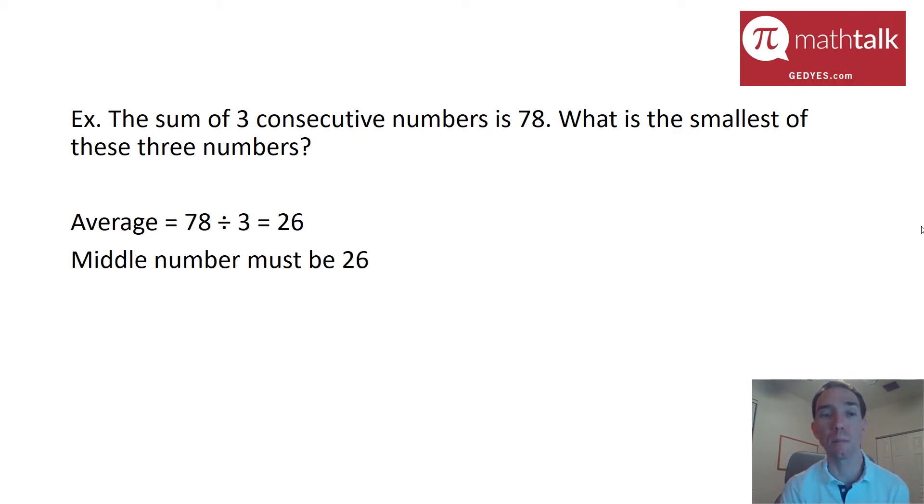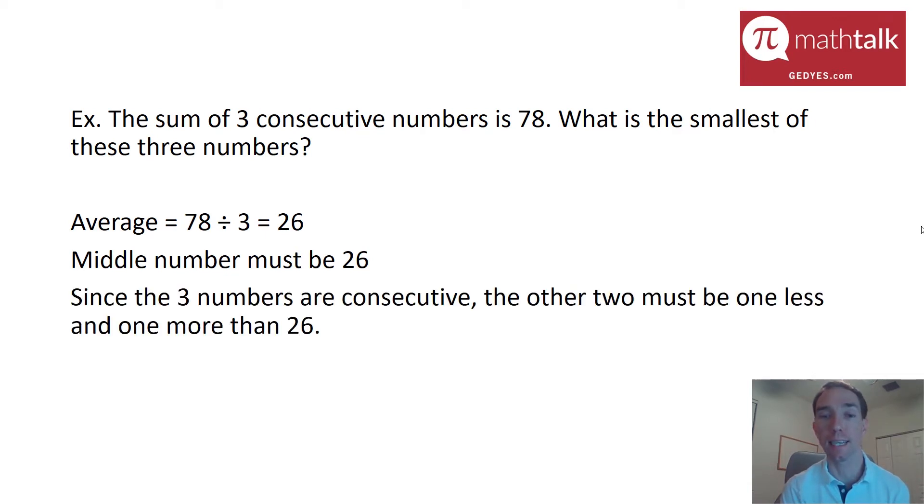That means the middle number has to be 26. Because they're consecutive numbers and 26 is the middle, that means the other two numbers have to be one less than 26 and one more than 26, which is 25, 26, and 27. So the smallest of those is 25. It's a nice little trick to solving these types of problems. It doesn't require you to do any kind of algebra, really.